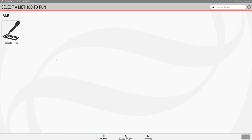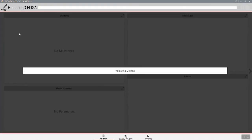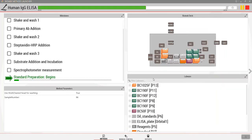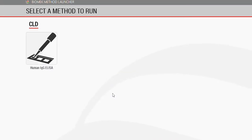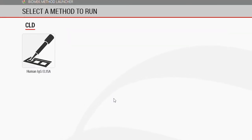Biomech Method Launcher is a simple user interface that enables even novice users to harness the full power of Biomech liquid handlers. It lets you organize and run methods using the app-style launch screen.